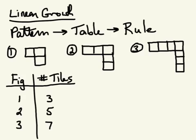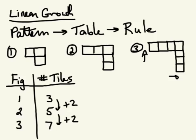We can see what's happening — every time I make a new figure I'm adding a tile on to the end, so I'm actually adding two tiles. That makes sense when I look at my table, because every time I go up a figure the tile count goes up by plus two. That's what makes it linear growth — a pattern that increases by a constant amount.